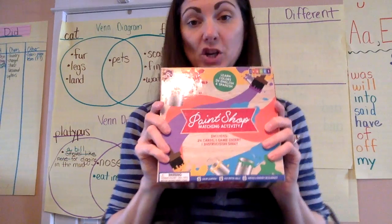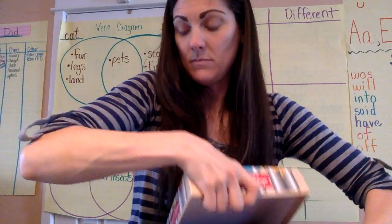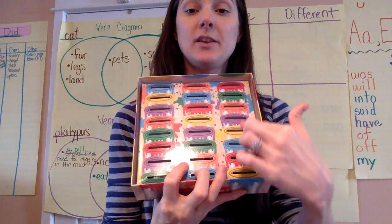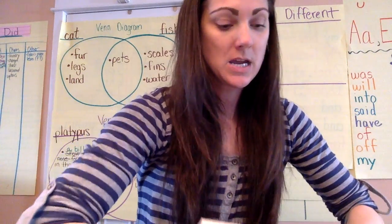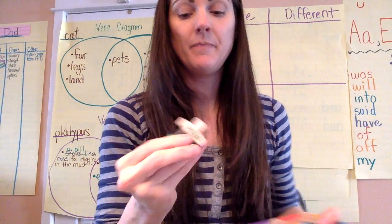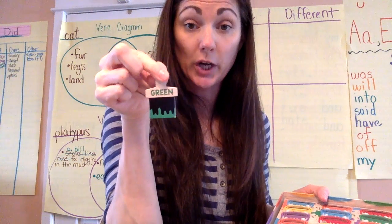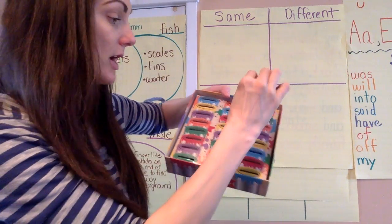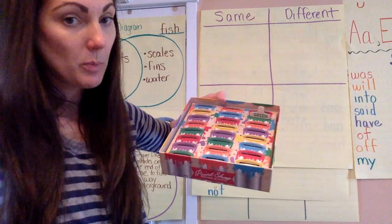The first game is called Paint Shop. If I open this game, I have something that looks like this. It has a bunch of little slots and all these different colors. The idea is you take one of the little paint brushes out. You can see on this side it says 'green,' and on this side it says 'verde,' which is Spanish for green. And then what you're supposed to do is match the green paint brush into its green can of paint. So that's how you play this game.